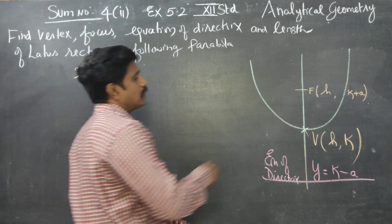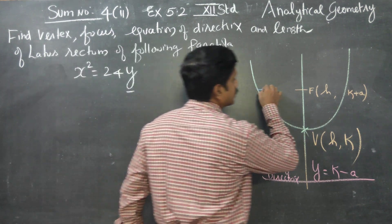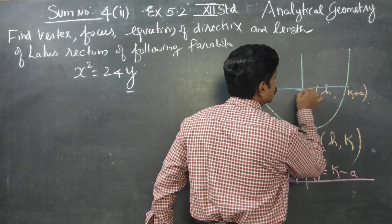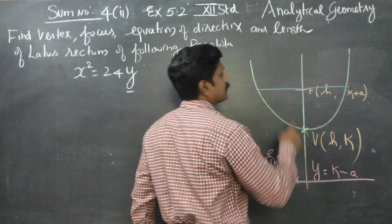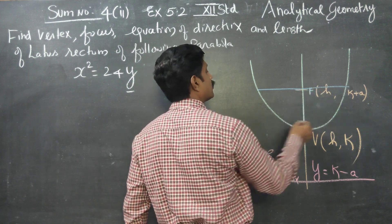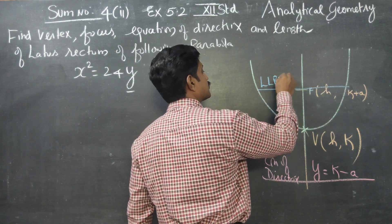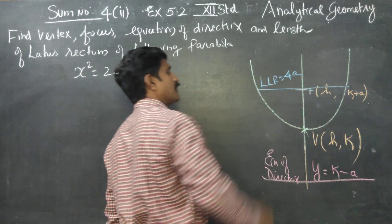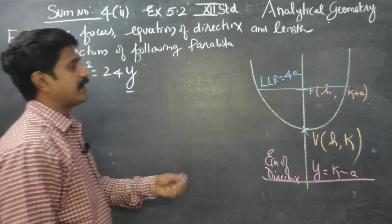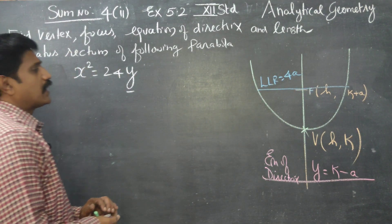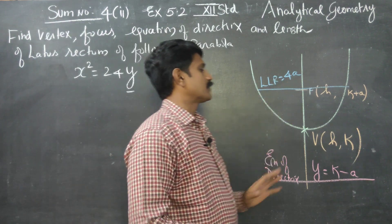Coming to the length of lattice rectum: the line through the focal chord — the length of lattice rectum is 4a, measured in units.